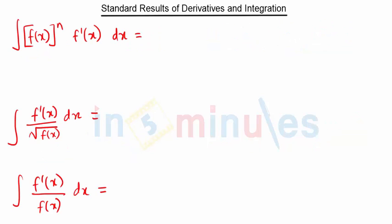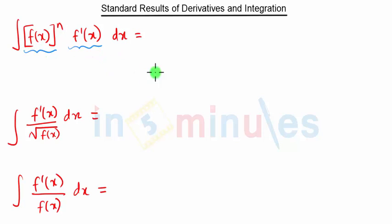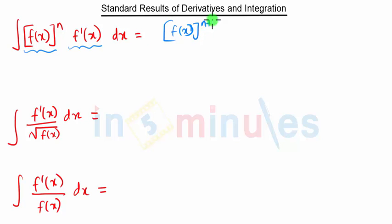Now we have the integration formulas. The integration of [f(x)]^n · f'(x) — whenever we can represent our equation in this form — has the direct formula: [f(x)]^(n+1) / (n+1).